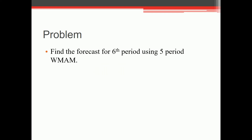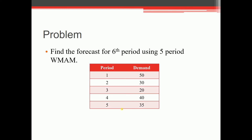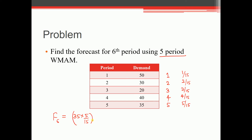Next: find the forecast for the sixth period using the five-period weighted moving average method. Assign weights 1, 2, 3, 4, 5 to the five periods. Their sum is 1+2+3+4+5 = 15. Weight fractions are 1/15, 2/15, 3/15, 4/15, and 5/15. Forecast for the sixth period = 35 × (5/15) + 40 × (4/15) + 20 × (3/15) + 30 × (2/15) + 50 × (1/15).